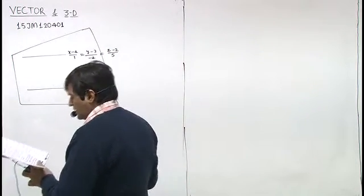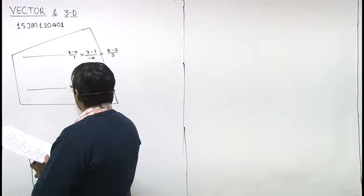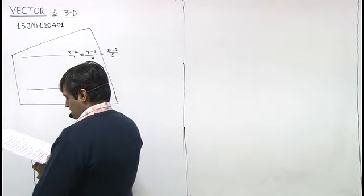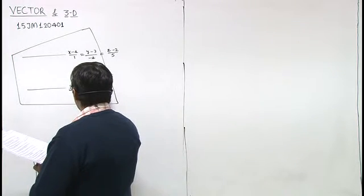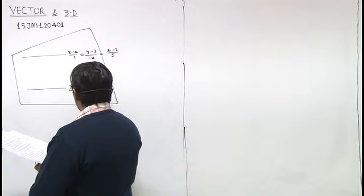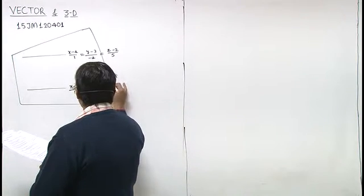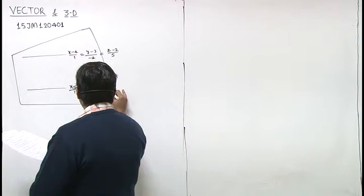And the second line is x minus 3 upon 1 equals to y plus 2 upon 1 by lambda equal to z minus 0 upon 1 by lambda.